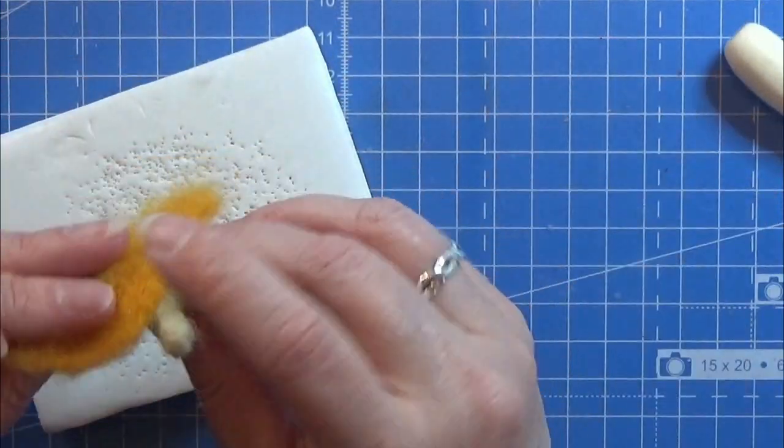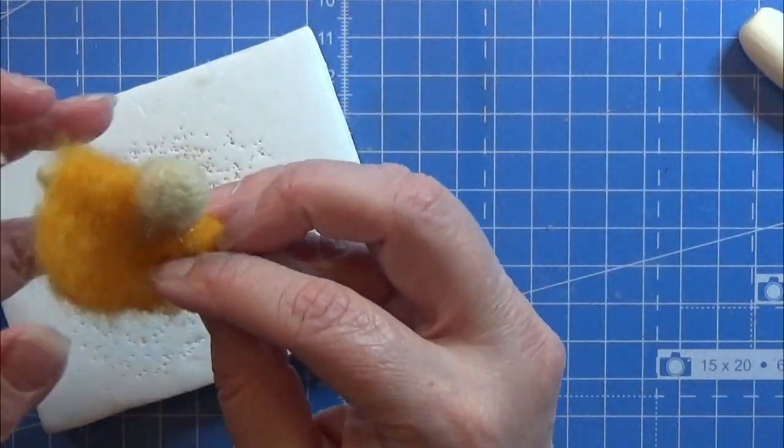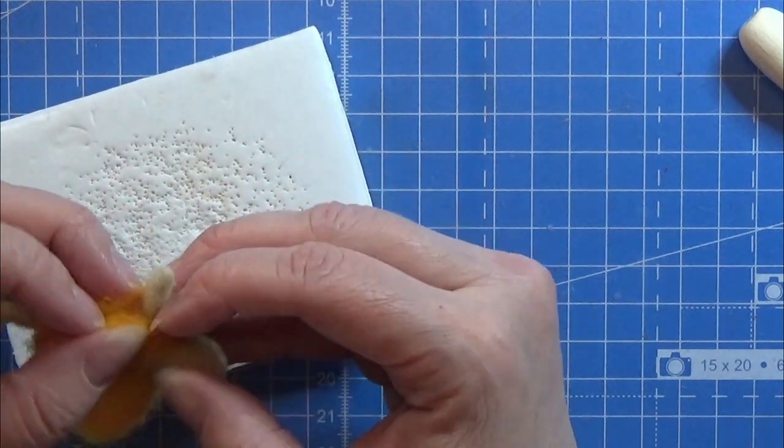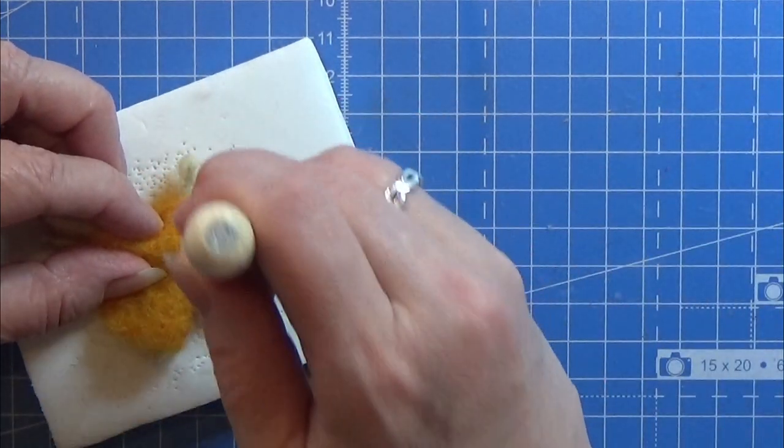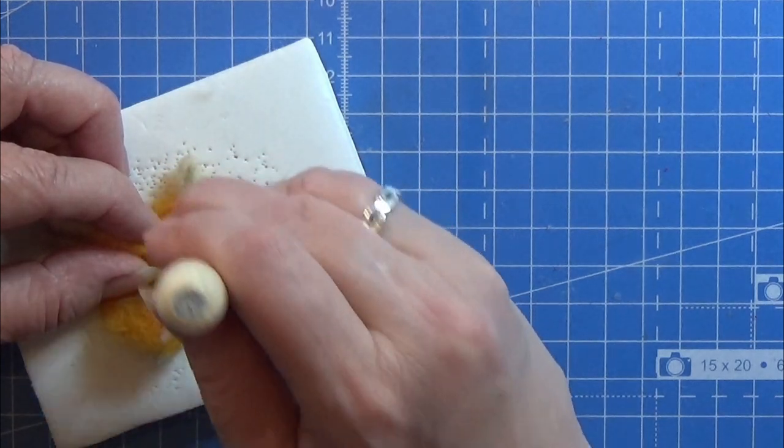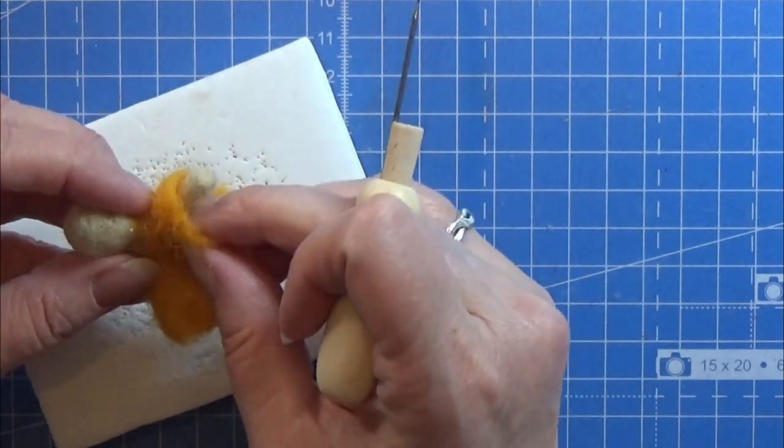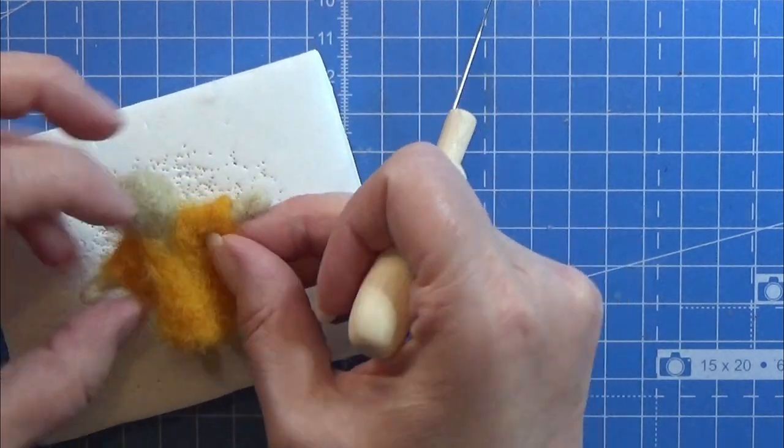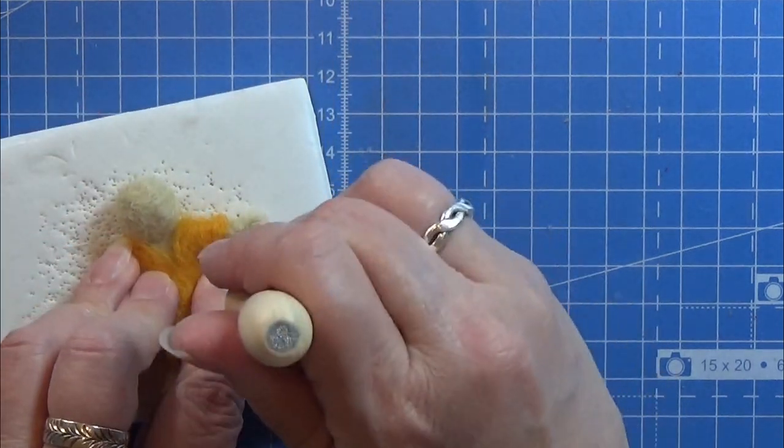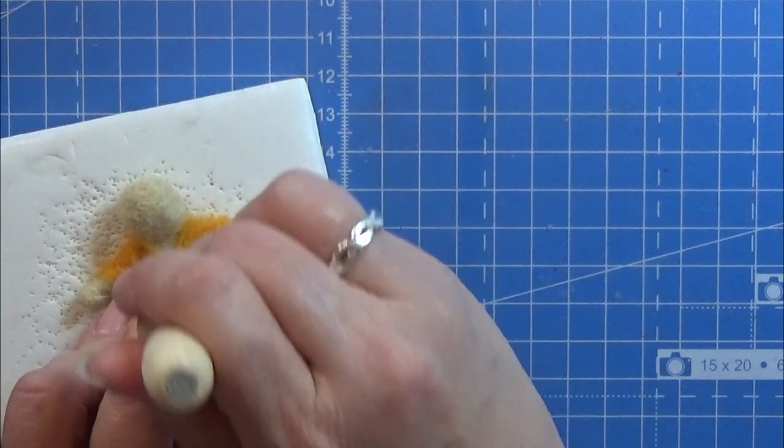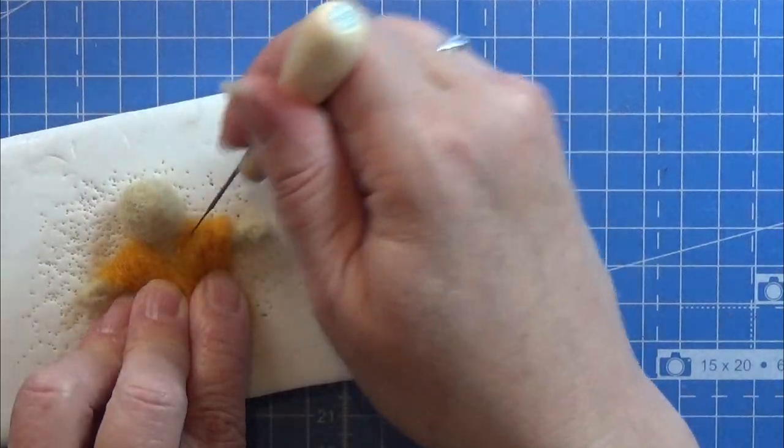Remember to pull it off and turn it over a few times and needle felt it from the other side, because it will get stuck on the work surface. I'm just pulling it over the head of the doll, and then I'm going to work it into the upper body so it is sitting just like I wanted.